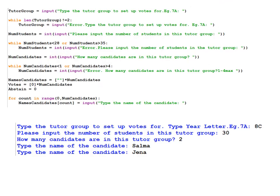So if you've completed step one, two, and three as we described, here's what you would see on the Python interpreter screen. So type the tutor group, 8C for example. Please input the number of students. You could input 30, how many candidates there are, two, and input their names.